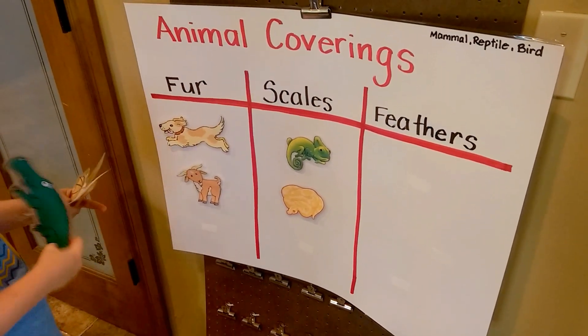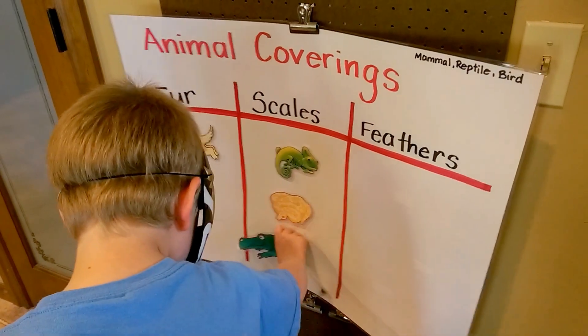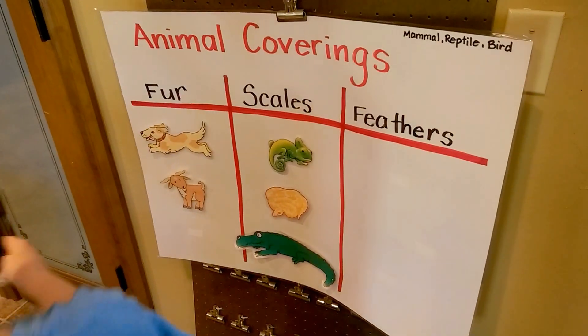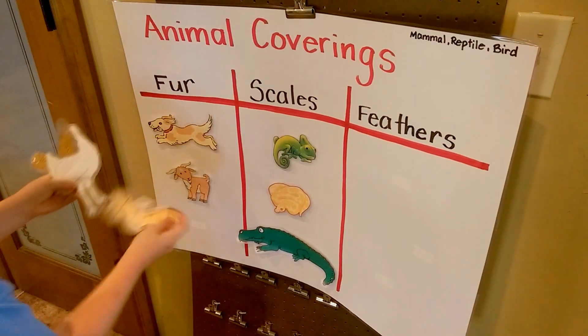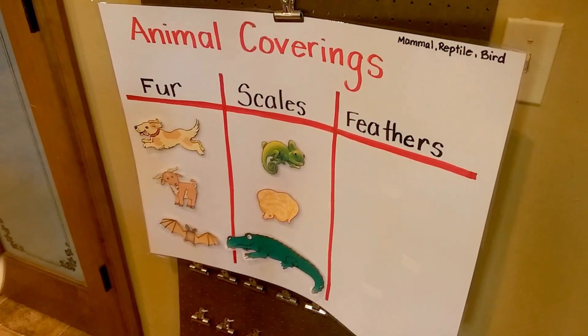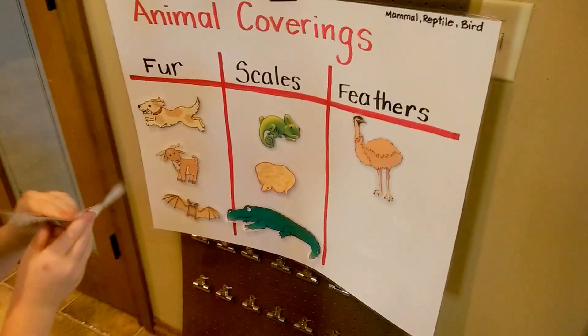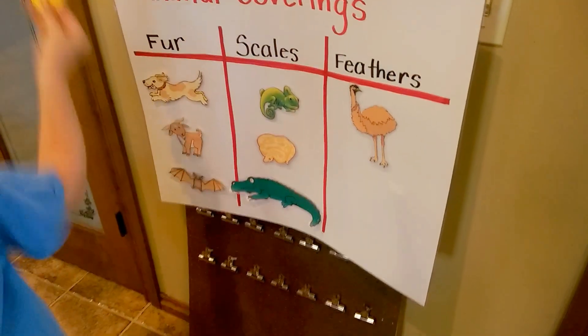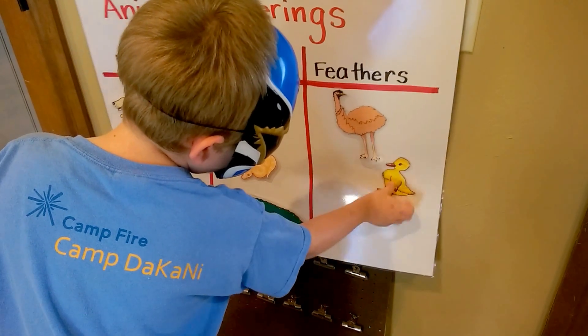This one is an alligator and it has scales. Yes — alligator, scales. This one is a bat and it has fur. Bat has fur. It flies like a bird. And an ostrich has feathers. Awesome. And an eagle has feathers. Ducks have feathers.